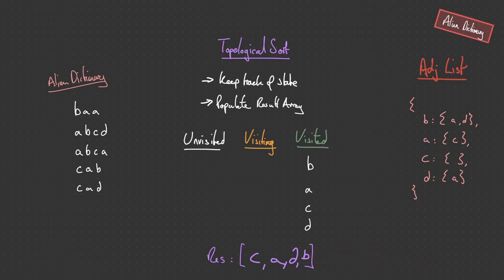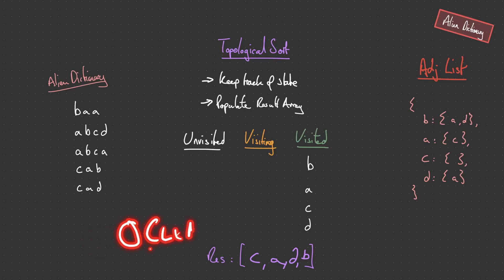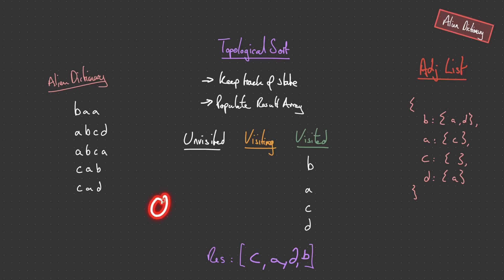So for time complexity we have two main areas: construction of the graph and topological sort. To construct the graph, with an average word length of l and n words, it's O(l × n). For topological sort in the worst case we visit each character and traverse each edge, which is O(k + e). And space complexity is also O(k + e). Now let's hop into the code editor and flesh this one out.